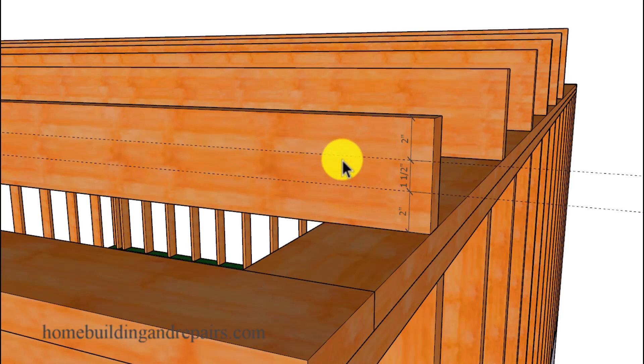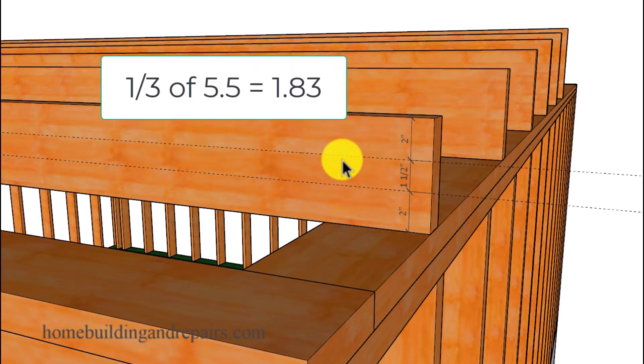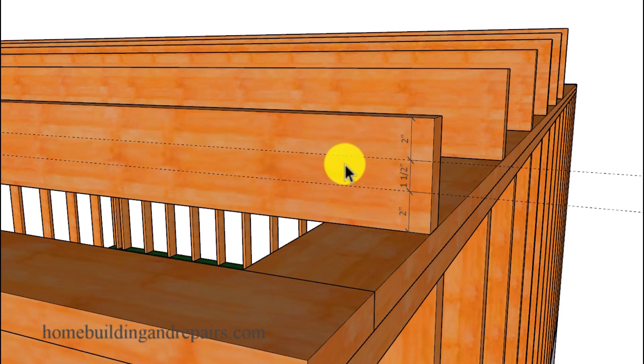So even though for a 2x6, 1/3 of the area is a little larger than an inch and a half, the maximum diameter of your hole and the placement of that hole can only be located in this section here.